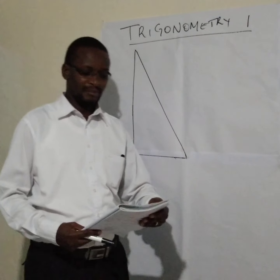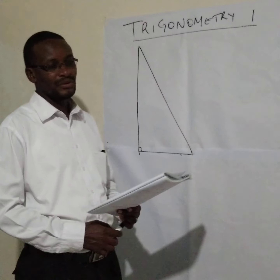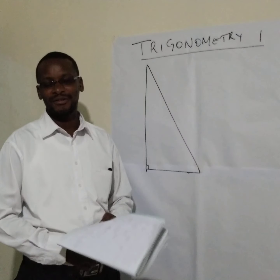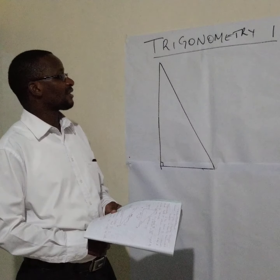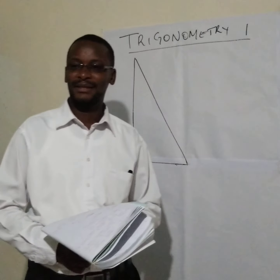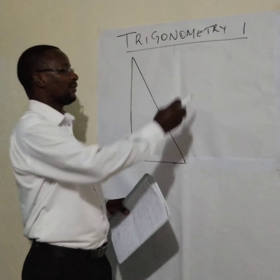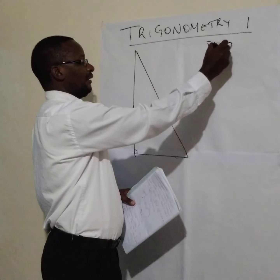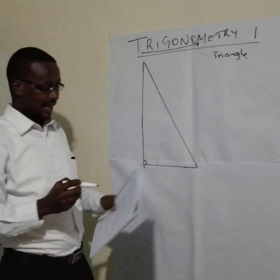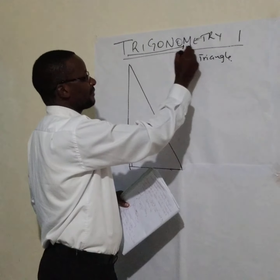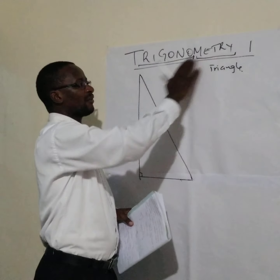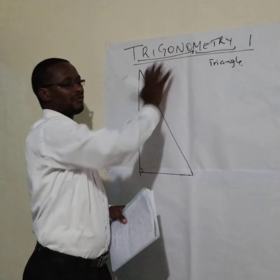Trigonometry is a branch of mathematics that deals with triangles and how the angles and the sides of the triangles are related. Actually, trigonometry is a Greek word, derived from two Greek words: 'trigonon' meaning triangle, and 'metron' meaning measurement. So we are actually dealing with the measurements of triangles — trigonometry.